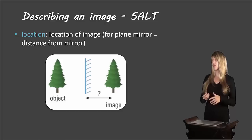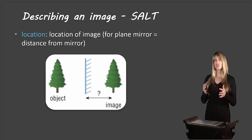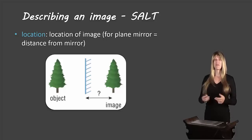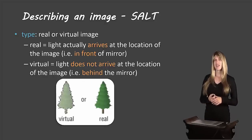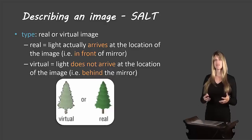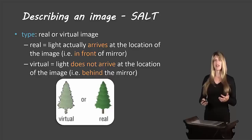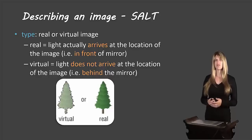L stands for location — this is the location of the image. For a plane mirror, it would be described as being on the same side or the opposite side of the mirror. T stands for type, meaning whether it's a real image or a virtual image. A real image means light actually arrives at that location; a virtual image means light does not arrive at that location.